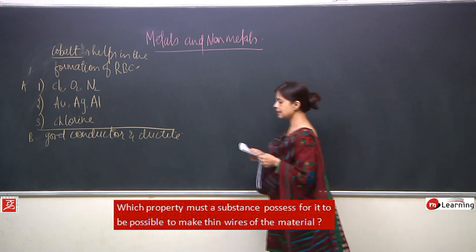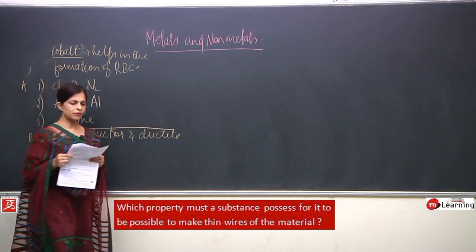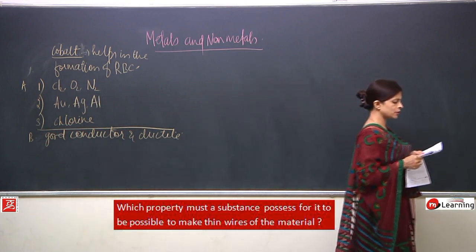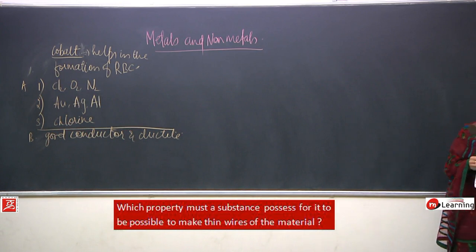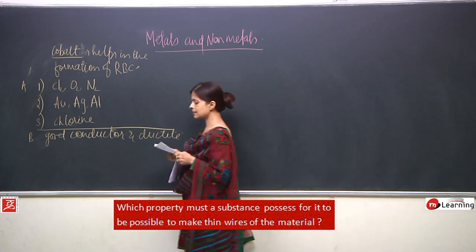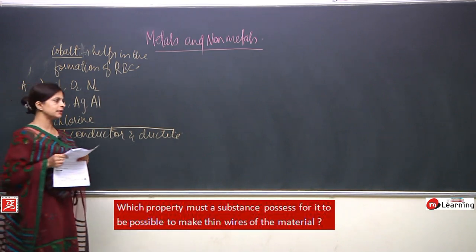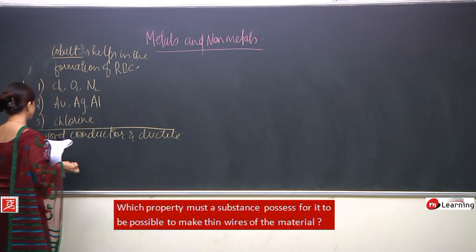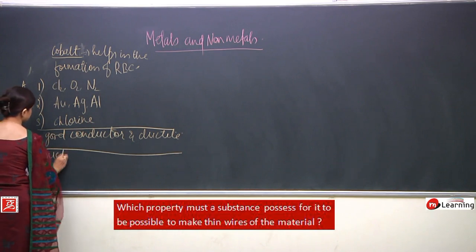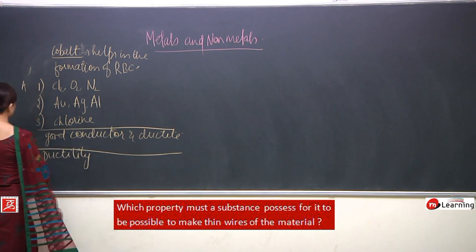Next question — though worded differently, it is the same concept: which property must a substance possess for it to be possible to make thin wires from the material? The answer is ductility.